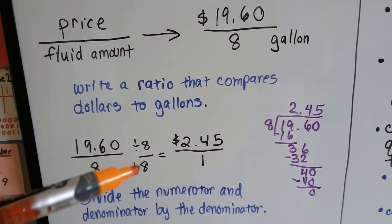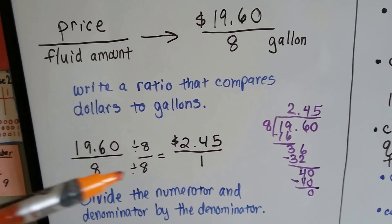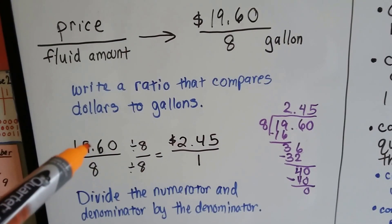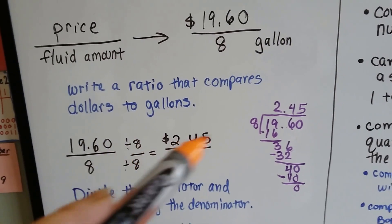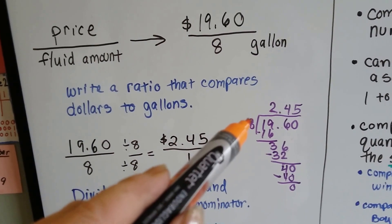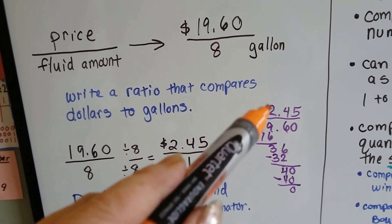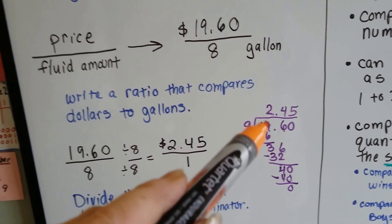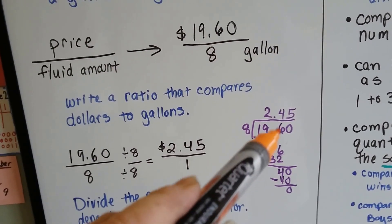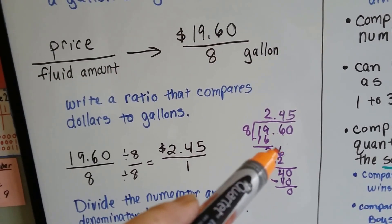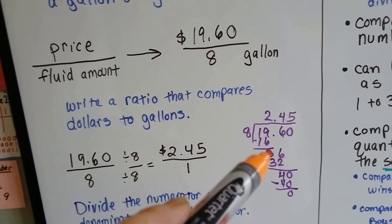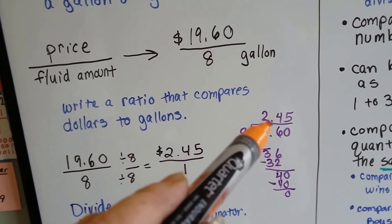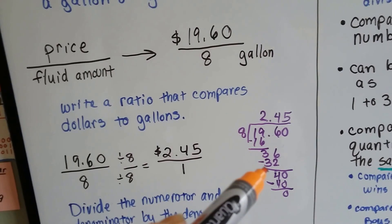We divide the numerator and denominator by the number in the denominator — $19.60 divided by 8. 8 goes into 19 two times. 8 times 2 is 16. We do subtraction and get 3. It's the 6's turn to come down. 8 goes into 36 four times. We put our decimal point straight up above.